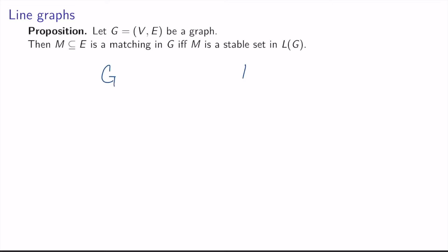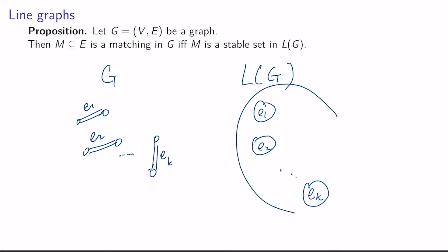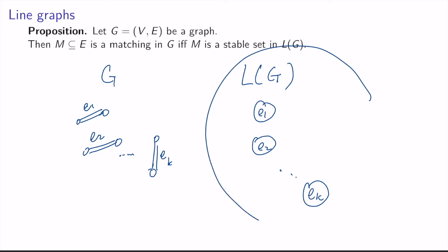Let's see why this is true. Say we have graph G and the corresponding line graph. Suppose we take a set of edges that form a matching, E1 up to Ek. In the line graph, these edges will be nodes. And because no two of these edges share an endpoint, there's no edge joining any of the corresponding nodes in the line graph, and so E1 up to Ek form a stable set in L(G). Conversely, if we take a set of nodes E1 up to Ek in L(G) such that no two nodes are adjacent, then the corresponding edges in G, by definition, do not share an endpoint, and so they form a matching.